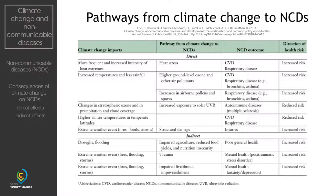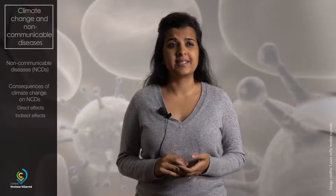Indirectly, extreme weather events such as droughts and floods can ruin crops, food yields and increase food insecurity, potentially affecting millions of people around the world, especially those dependent on subsistence practices. This results not only in poor general health but takes people into a vicious cycle of malnutrition, poverty and disease.